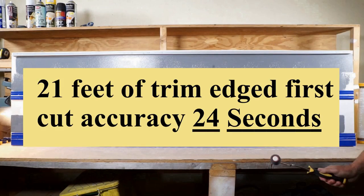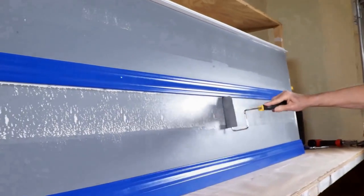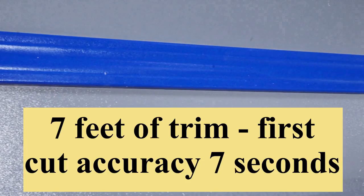Here is a shot of edging 7 feet in 7 seconds with a close-up photo taken after the paint has dried. Most paint jobs are 2 cuts and 2 coats.